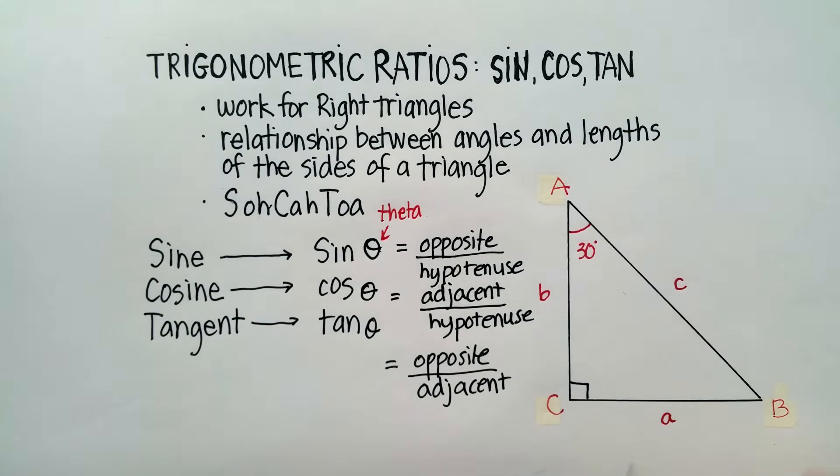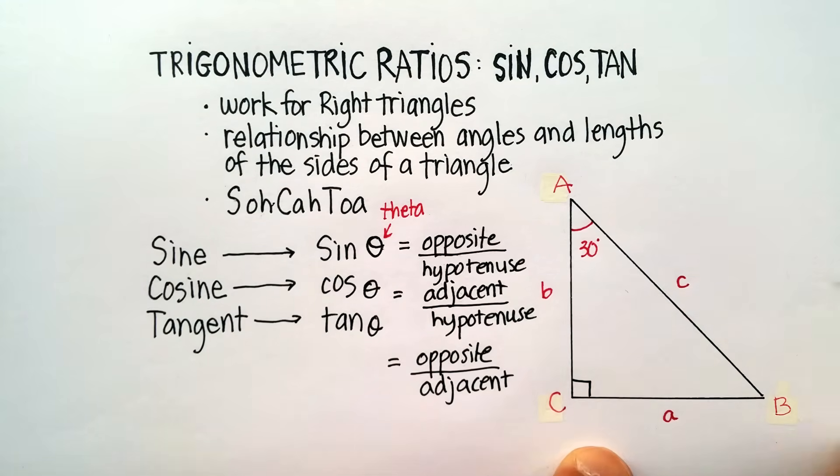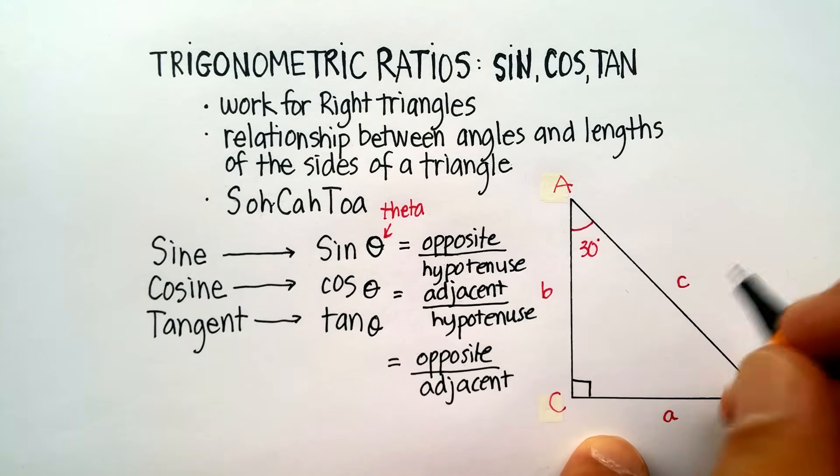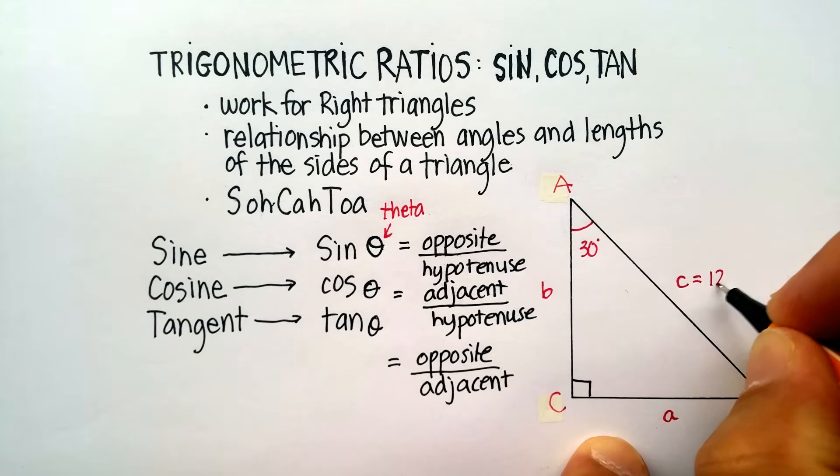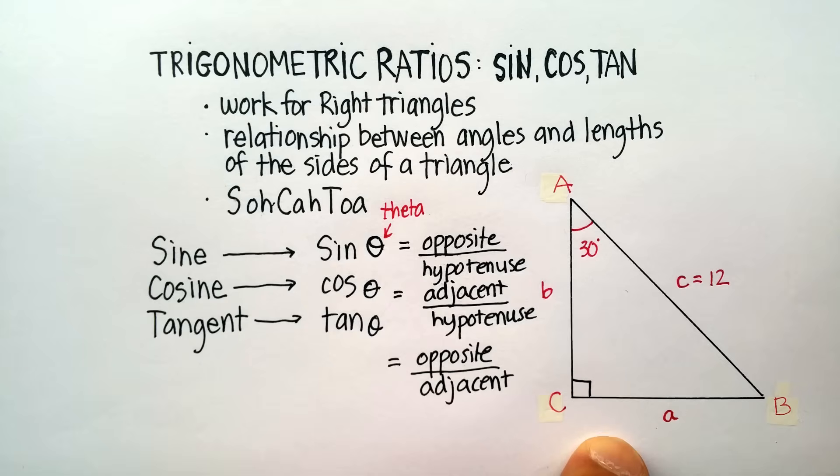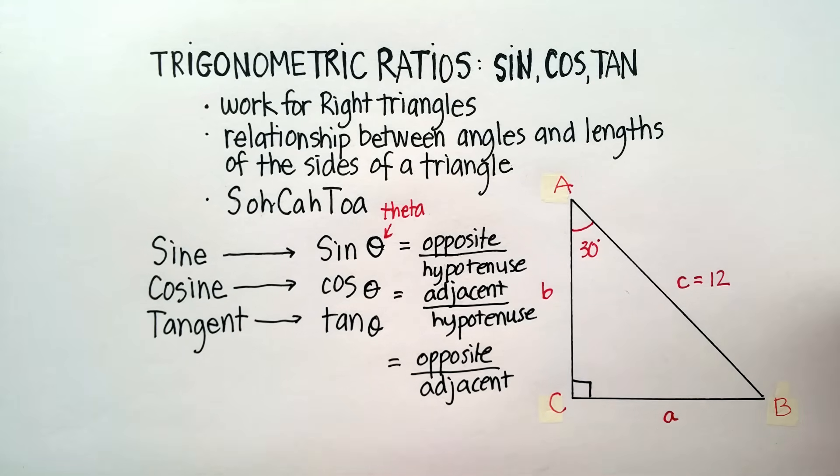Now, again, let's just go ahead and try one of these problems. Let's see if we can figure out what the length of any of these are. And I'm going to say I know that angle A is 30 degrees, and I'm going to say that I know that the hypotenuse is, let's say, 12. 12 inches or whatever that might be. But I know nothing else. And I want to figure out what A and B are, and I want to figure out what angle B is. So here we go.